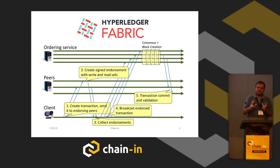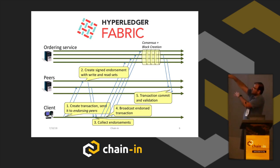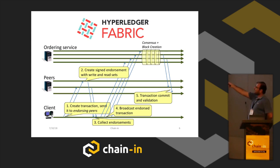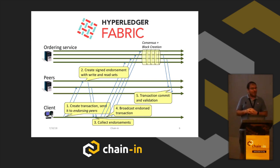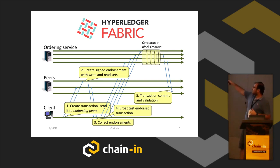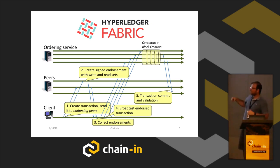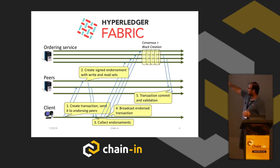The client then collects the endorsement — the transaction and its outcome — and sends it to the ordering service. The ordering service is the one that does the consensus. You can see we are separating the nodes, though all these daemons can run on the same machines if you want. The ordering service can be a single node or multiple nodes implemented in different ways. It accumulates transactions and generates blocks, which are sent back to peers that validate the outcome and add the block to the blockchain.